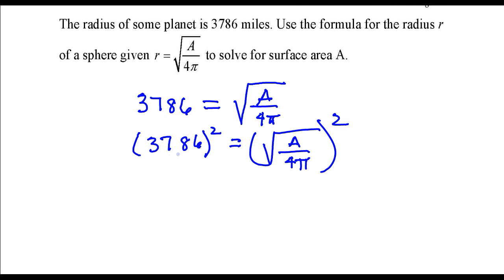So 3,786 squared - I'm going to leave it like that. It's a very large number, so I'm going to leave that until the end. And the square root of A divided by 4π squared is just A over 4π.